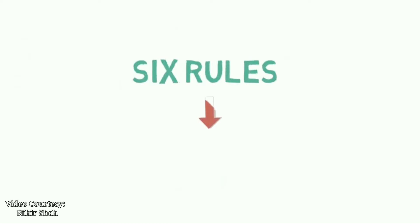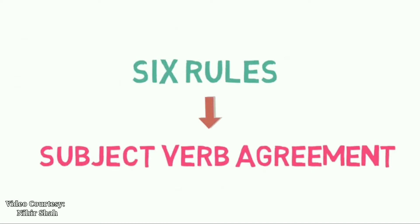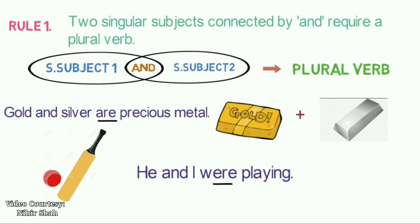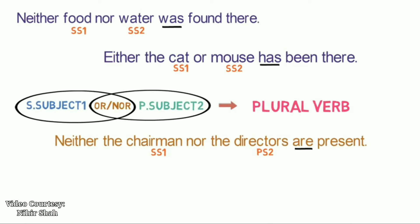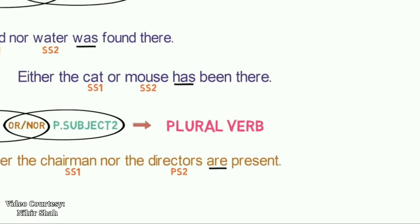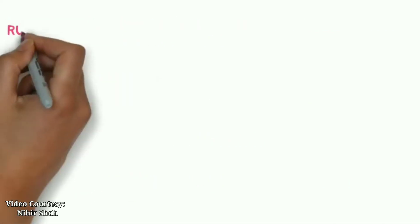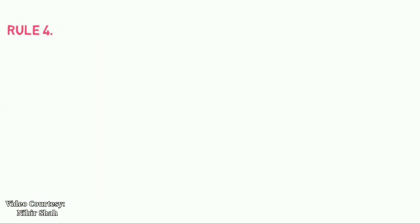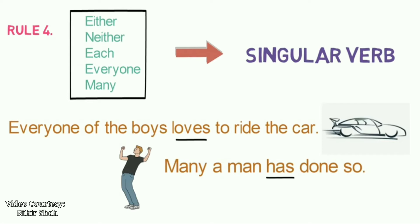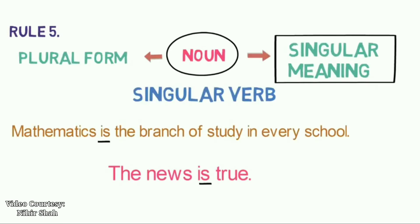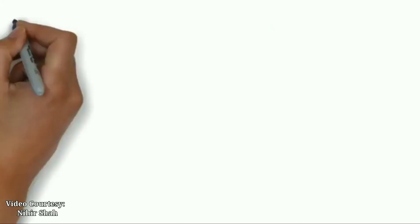We also learned 6 rules of subject-verb agreement in our previous video. Let me quickly recap those rules. Rule 1: Two singular subjects connected by AND require a plural verb. Rule 2: Two or more singular subjects joined by OR or NOR require a singular verb. Rule 3: When subjects joined by OR or NOR are of different persons, the verb agrees with the nearer one. Rule 4: Words like 'either,' 'neither,' 'each,' and 'everyone' must be followed by a singular verb. Rule 5: Some nouns plural in form but singular in meaning take a singular verb.